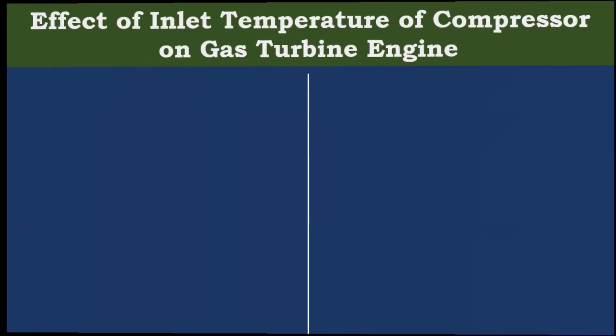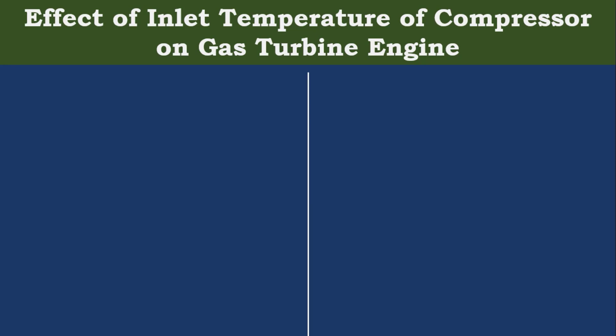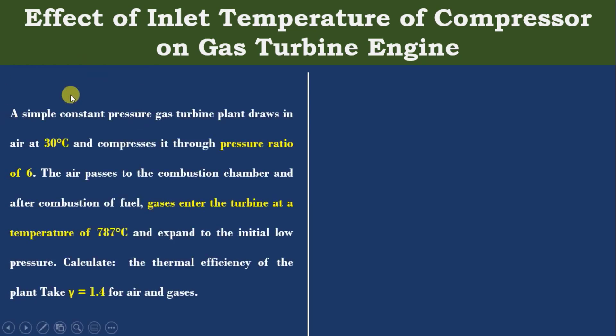For that, I have taken two different problems but having the same parameters. First problem: a simple constant pressure gas turbine plant draws air at 30 degrees Celsius, which means in the first case the ambient temperature is 30 degrees Celsius, and compresses it through a pressure ratio of 6, Rp equals 6.